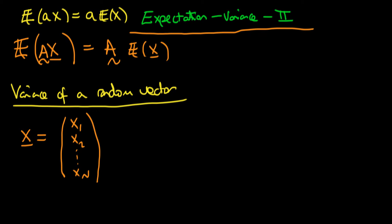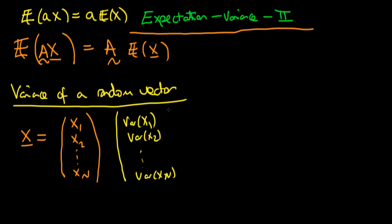You might think the way we would define the variance of x is just to write it as the variance of x1, the variance of x2, all the way through to the variance of xn — simply the variance of each individual component. But that wouldn't actually be correct, because even though each component has its own variance, this is missing information about how these particular elements actually co-vary with one another.